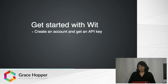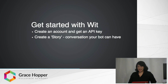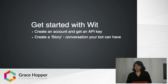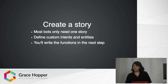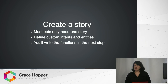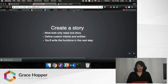You get started with Wit.AI by creating an account and getting an API key — I'm not going to demo that because it's pretty straightforward. Then you will create a story in their website, which is the conversation that your bot can have. Most simple bots will only need one story, and in the story you'll define custom intents and entities. Once you've done that, you can write functions that will tell it what those do.